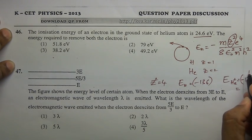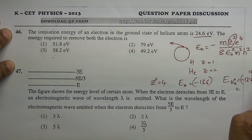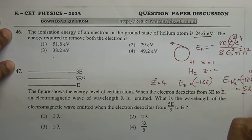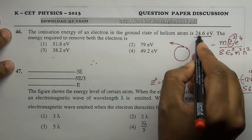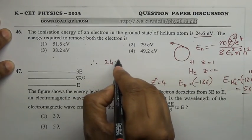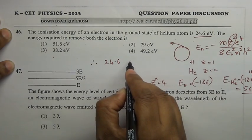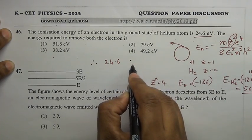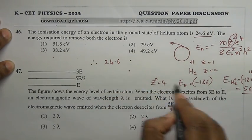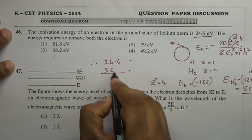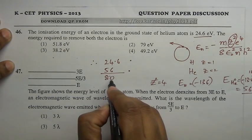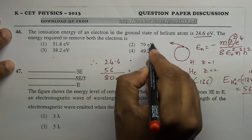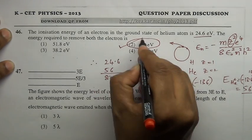Let this be approximately 56 eV. The initial energy (first ionization) is 24.6 eV. The energy required to remove the other electron is 56 eV. So the total sum is approximately 80 eV. The answer closest to 80 is 75, which is closer to 80.